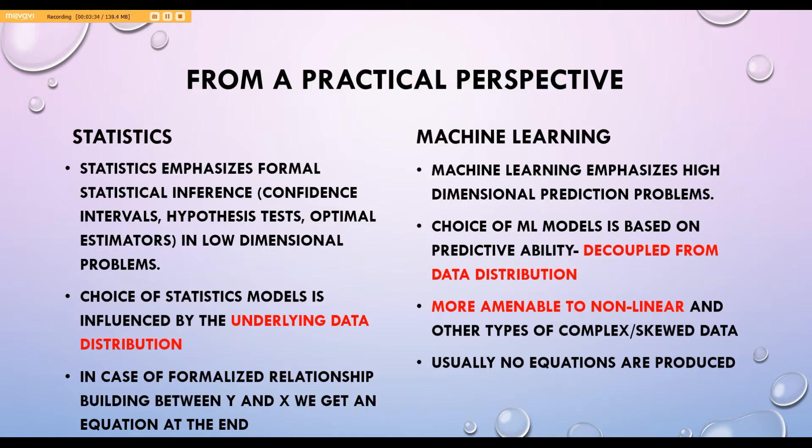In machine learning models, the choice is based on the predictive ability of the model, so it is decoupled from data distribution. This makes machine learning more amenable to non-linear and other types of complex and skewed data. For most machine learning systems, you do not need normally distributed data in any form or shape.